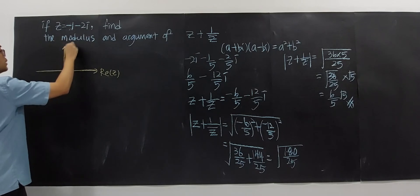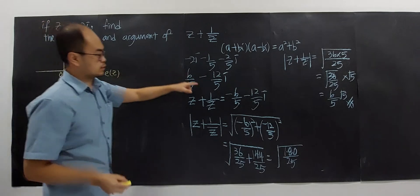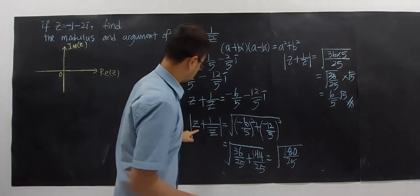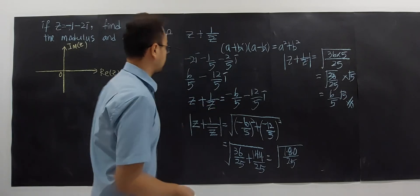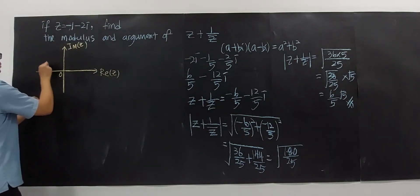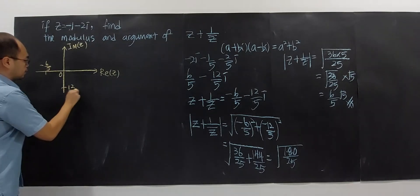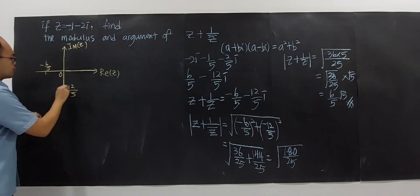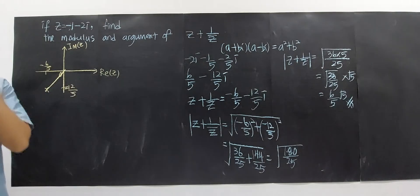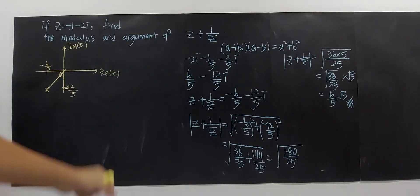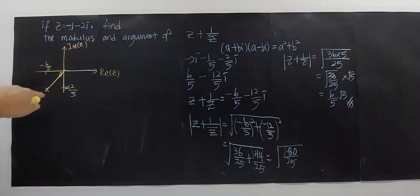Our complex number is negative 6 over 5 minus 12 over 5 i, so both the x and y values are negative. This places the complex number in the third quadrant. The angle cannot go the long way around, as that would be more than 180 degrees.